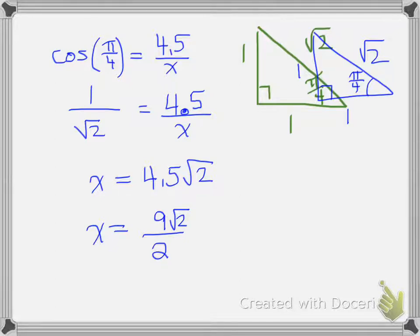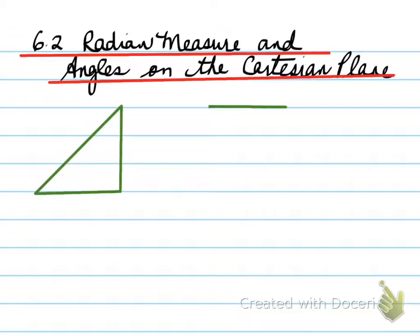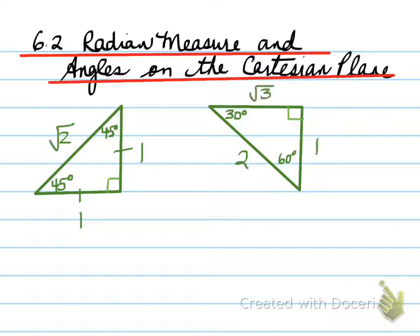Let's go to the lesson now. In 6.2, radian measure and angles on the Cartesian plane are as follows. So, these are the special angles that we learned in grade 11: 1, 1, root 2, and the 30, 60, 90 triangle, 1, 2, root 3. Now, what's important to note is even though I call this the 1, 2, root 3, 2 is always going to be our hypotenuse, because that's the largest value of all three of these. The right angle in the right triangle points to the hypotenuse. The hypotenuse is the largest angle, because it is opposite the largest side.